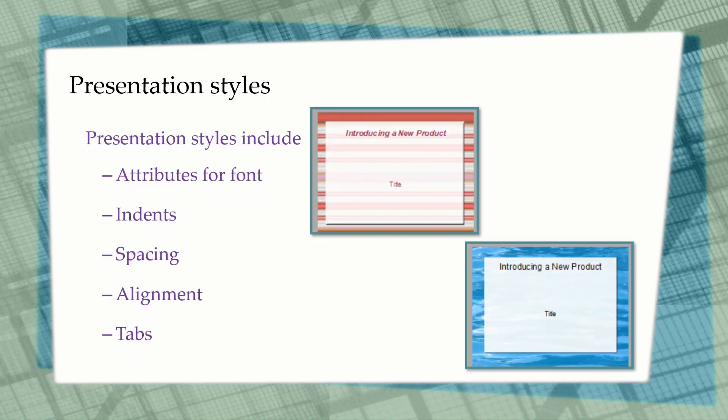The last style is the presentation style. Presentation styles are used in OpenOffice Impress to create presentations. Presentation styles include attributes for font, indenting (spacing from the beginning of the line), spacing, alignment, and tabs. This is only used in OpenOffice Impress.